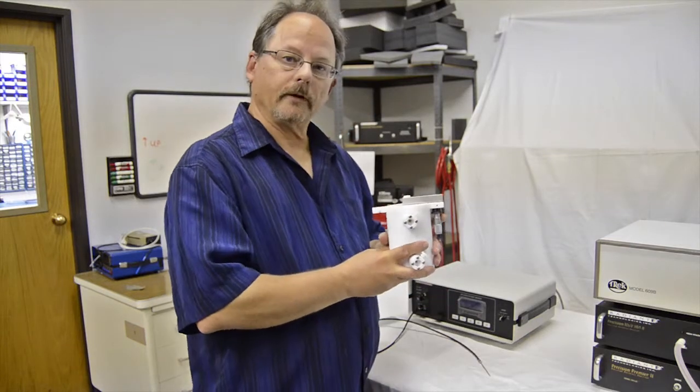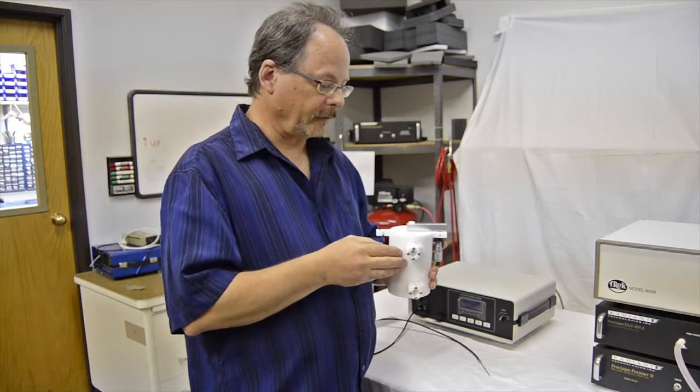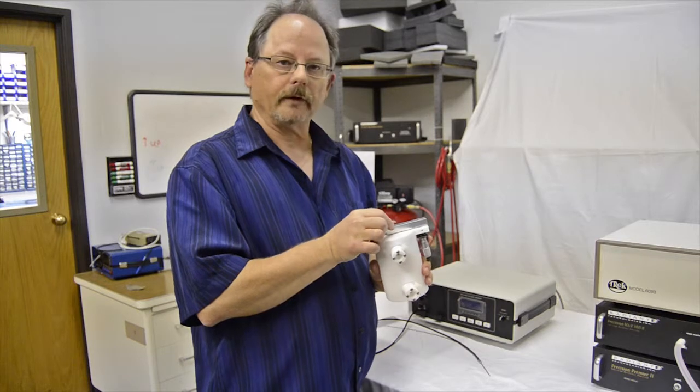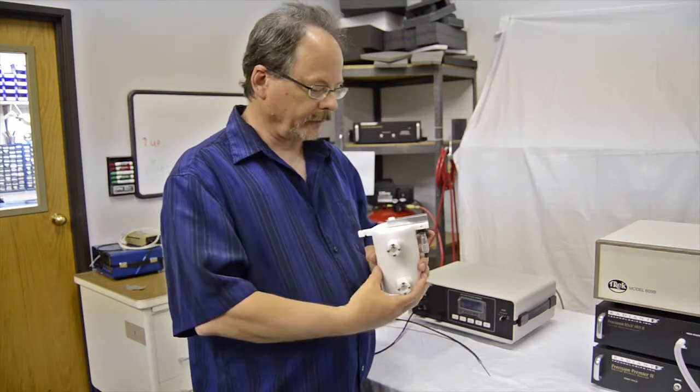For narrower test wands, such as the one that we're going to be demonstrating today, a friction sleeve is placed in the hole and it will hold the test wand in place.